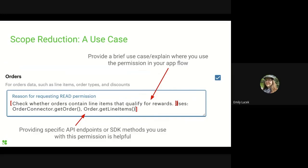We've cut a lot of permissions; all that's left is to justify the remaining ones. After you finalize the permissions you'll require, let us know how you use each one and call out specific API endpoints or SDK classes used with them. This will help us understand how the permission fits into the larger whole of your app when we review it. For example, for orders read, we might say we need it to check whether orders contain line items that qualify for rewards, and that we use the Order Connector's get order method along with orders get line items. These justifications inform both the functional and legal review of an app, so providing detailed information and pointing out where you use permissions in your functional video will help set you up for success during the approval process.